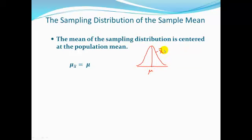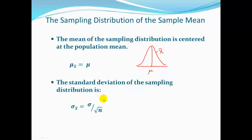The x-bar distribution is sometimes bigger than mu, sometimes smaller than mu, but on average it's centered right at mu. The second result is that the standard deviation of the sampling distribution of x-bar is sigma divided by the square root of n. That square root of n in the denominator is where students have trouble. It would be nice if it were just sigma, but it doesn't work that way.